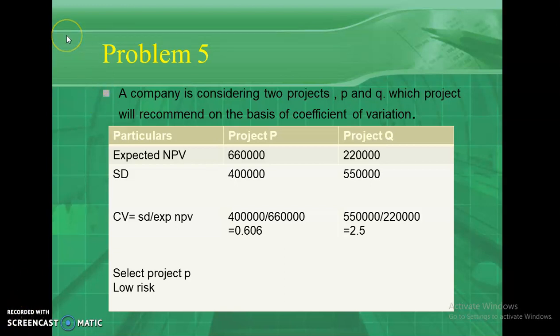The first problem was related to the certainty equivalent method, and the second problem was related to the coefficient of variation. We will continue in the next session.